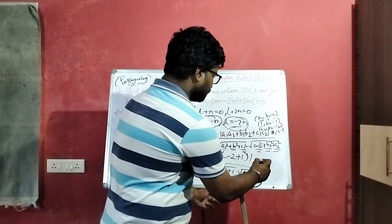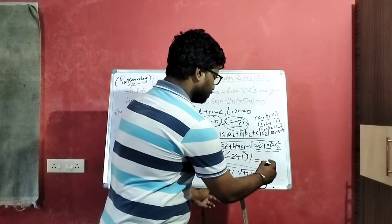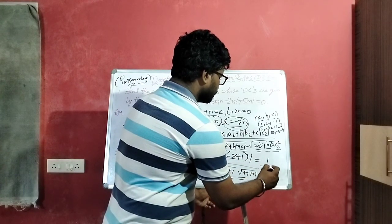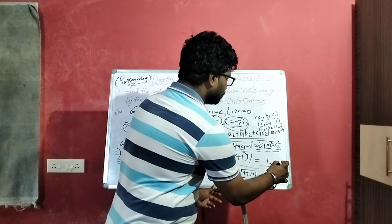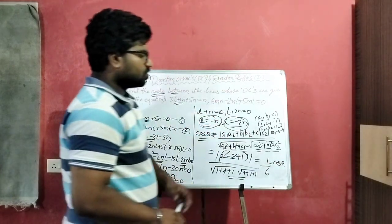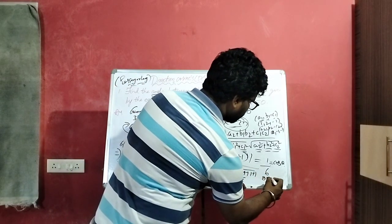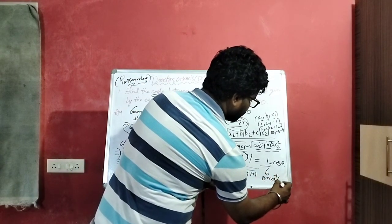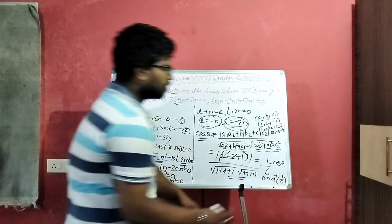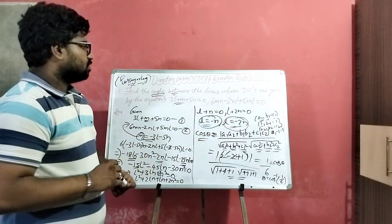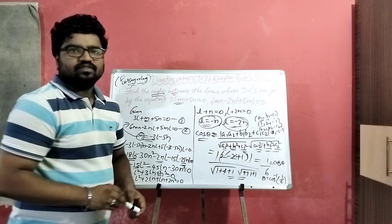which is nothing but root 6 whole square, root 6 whole square means 6. So cos theta is equal to 1 by 6, which is nothing but the angle. So theta is equal to cos inverse 1 by 6.